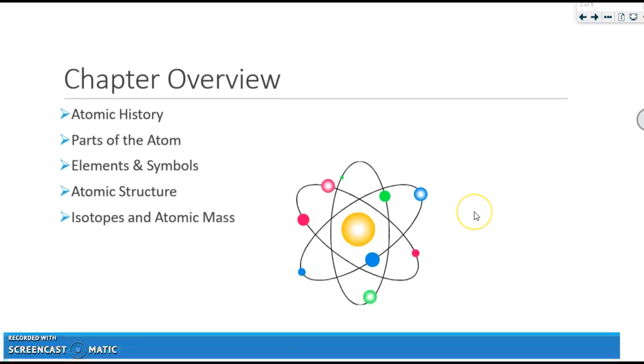Here you will see the topics that we are going to be discussing. We're going to run through some atomic history, review the parts of the atom, discuss elements and symbols, how to calculate various parts of atomic structure, discuss isotopes, and how to find atomic mass.